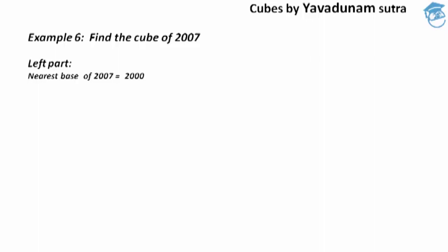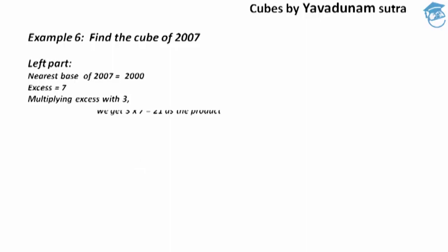After finding the nearest base, moving to step number 2. We have to find the excess of the given number. The excess becomes 7, since it is found by comparing 2007 with the base 2000 — we have an excess of 7. After finding the excess, moving to step number 3: we have to multiply the excess by 3. By multiplying 7 by 3, we get 21 as the product.